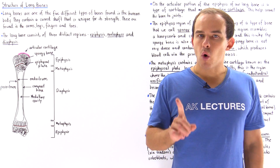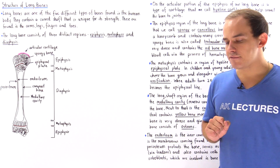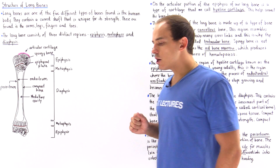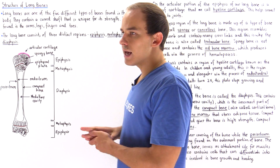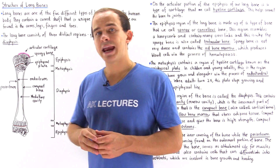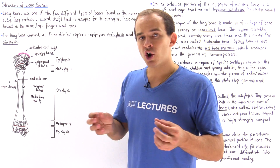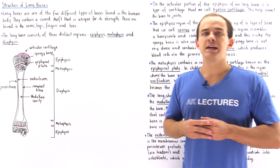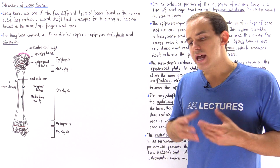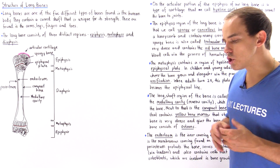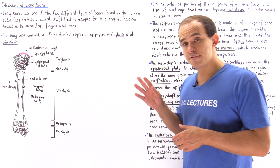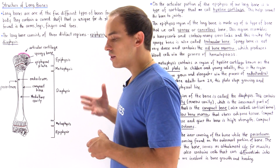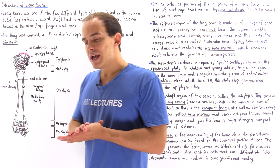Long bones are one of the five different types of bones found inside our body, and they contain long curved shafts that basically give the bone its strength. Long bones are found in the fingers and the toes as well as in the arms and legs.